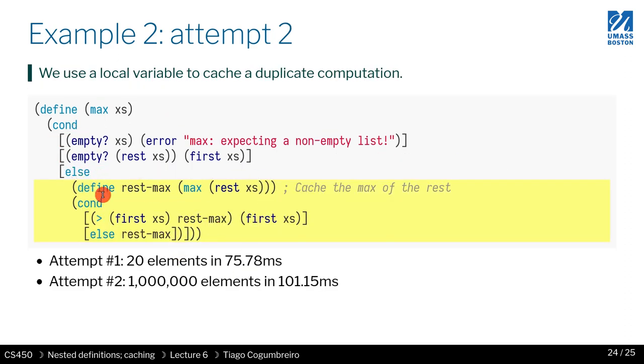So we get the else case. And in the else case, what we do is we can define another variable, a local variable, just defining this branch, just exist in this branch of else. And we do another conditional that checks if the first element is greater than the rest of the max, then return the first element, otherwise return the rest of the max.